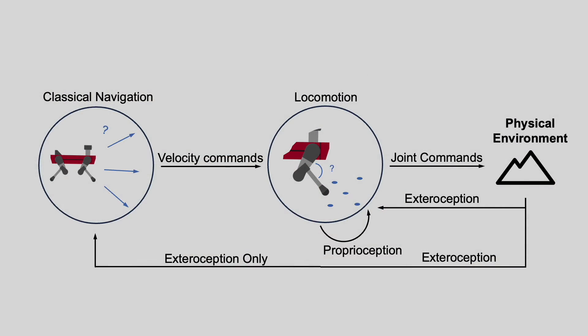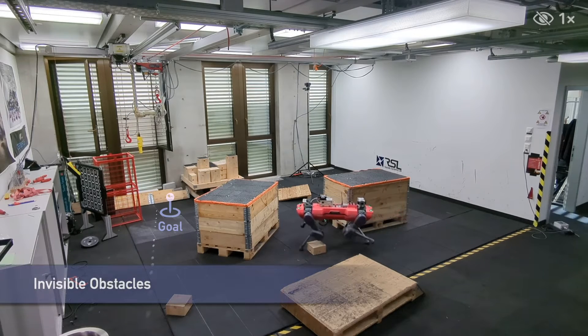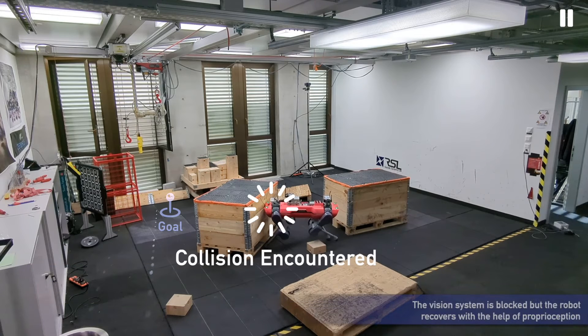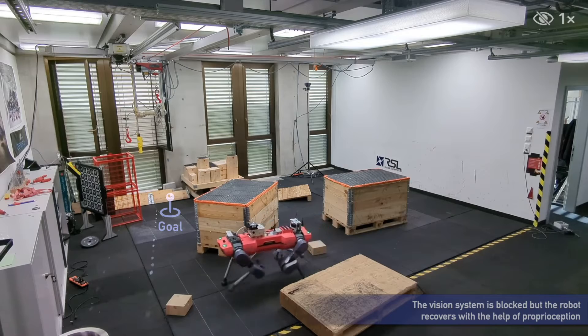To tackle this problem, we propose to train a local navigation policy fully end-to-end in simulation. Our method feeds back the proprioceptive information used to train the locomotion policy to our proposed navigation policy. The proprioceptive information includes the motion states of the robot, corresponding to the physical environment.